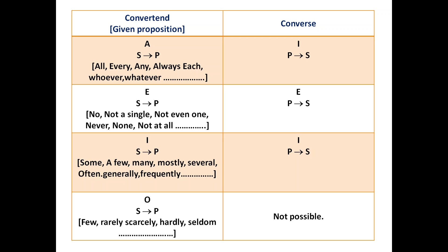For an I proposition — where words like some, a few, many, mostly, several, often, generally, and frequently are used — if the given proposition is 'some S is P', the converse of I will remain I and only the subject and predicate interchange. So the converse will be 'some P is S'. For an O proposition — where words like few, rarely, scarcely, hardly, and seldom are used — the converse of O is not possible. You have to remember this table when solving conversion exercises.